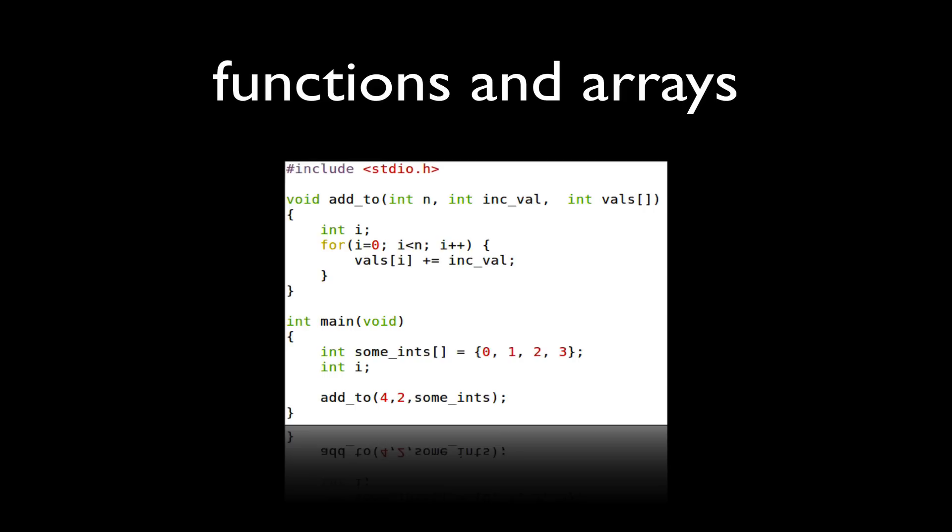However, arrays in C are always sent by reference. That means that a copy is not made of the data. Instead, an address to the array variable, in this particular example, the parameter val, an address to that value or that variable is placed on the stack.